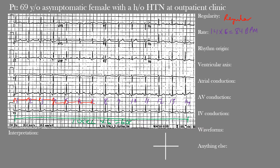Because we're dealing with a regular rhythm, we can also use the 300-divided-by-big-boxes method. Find an R wave that falls on a thick line, then count the number of thick lines until the next R wave — in this case, about four. 300 divided by 4 equals 75 beats per minute. Most EKGs will display the rate automatically, but always verify it yourself. The actual rate in this case was 83 beats per minute, quite close to our estimates.